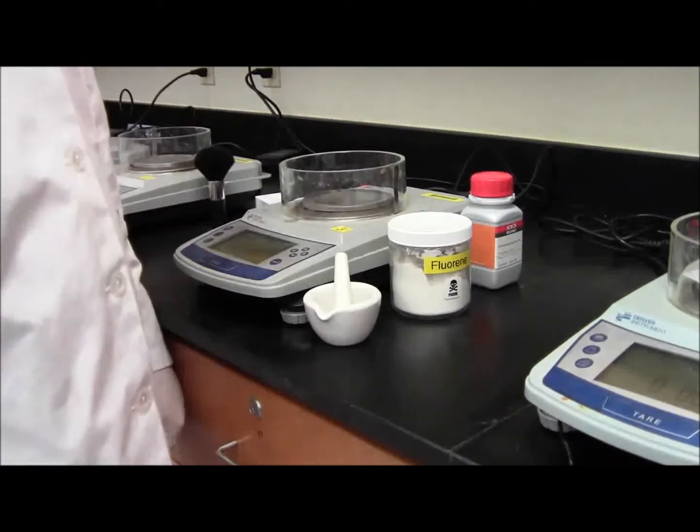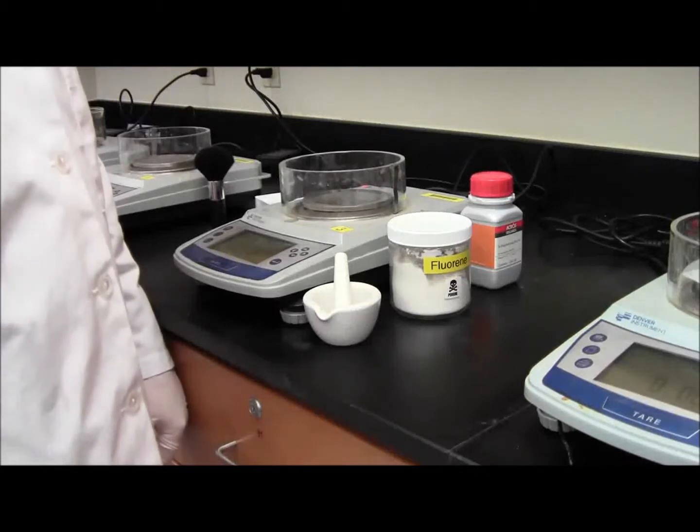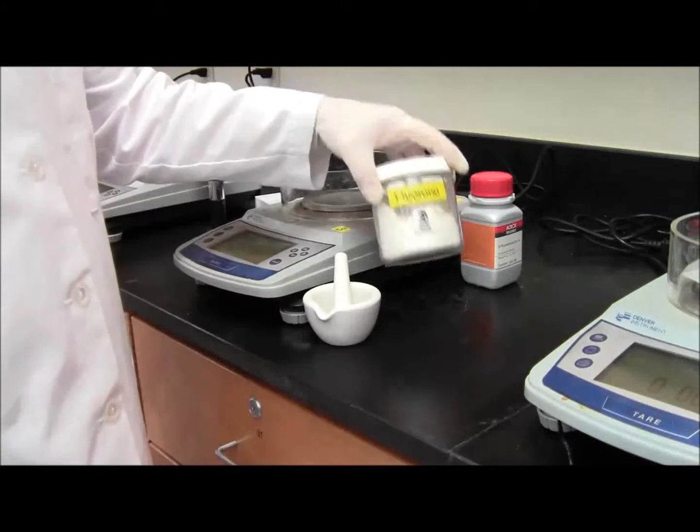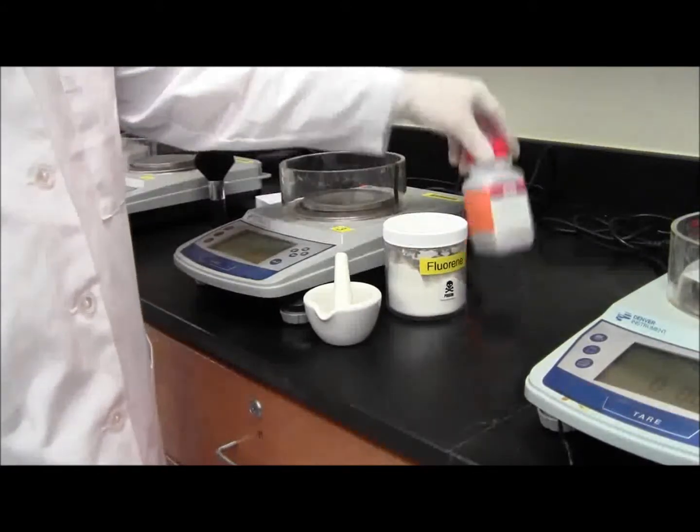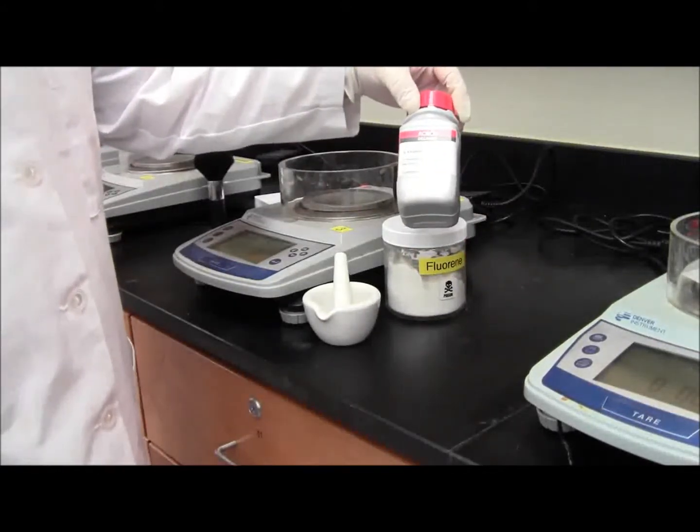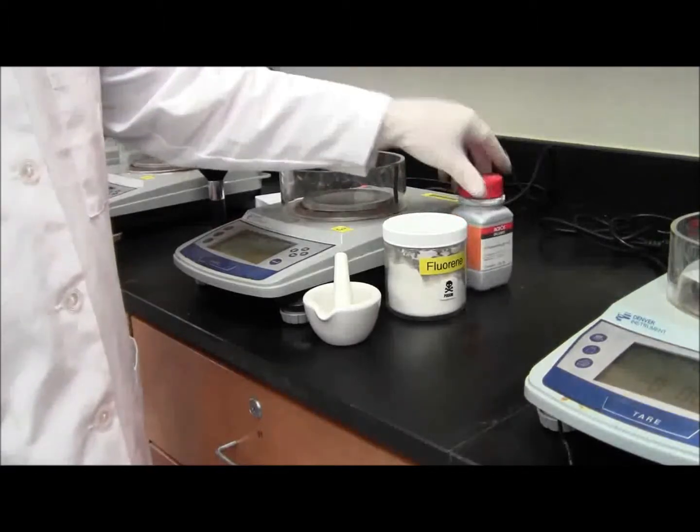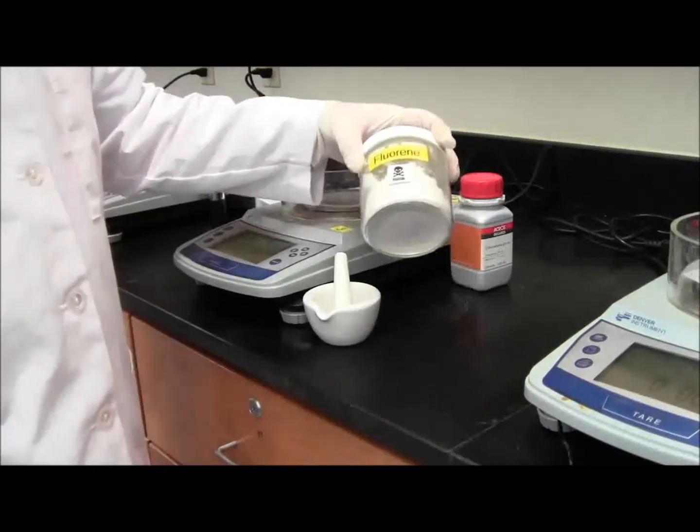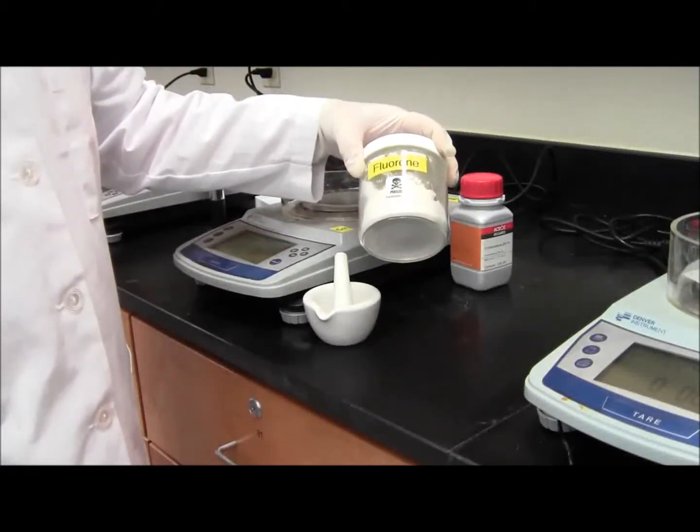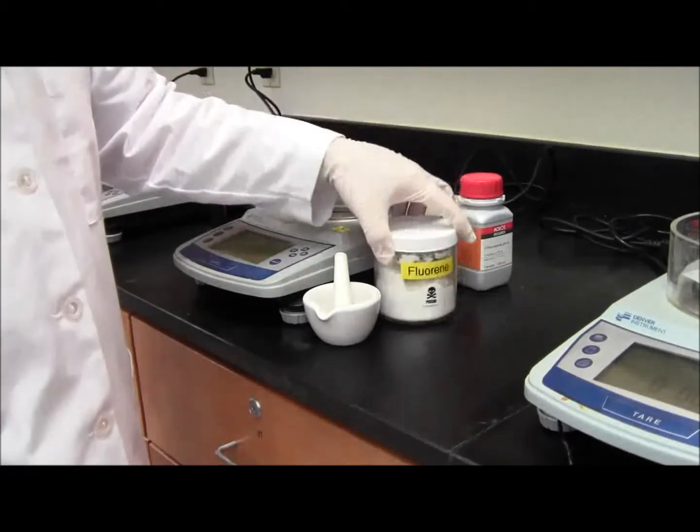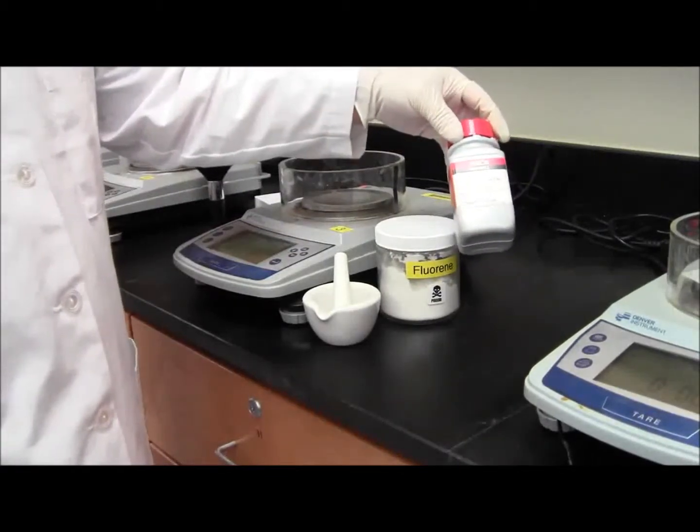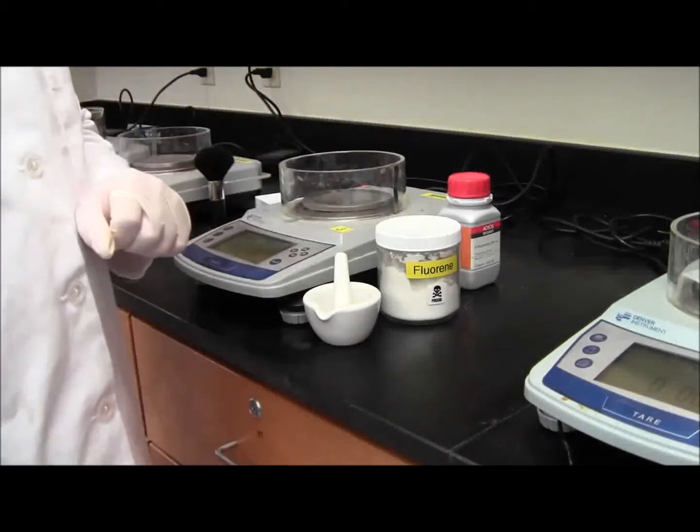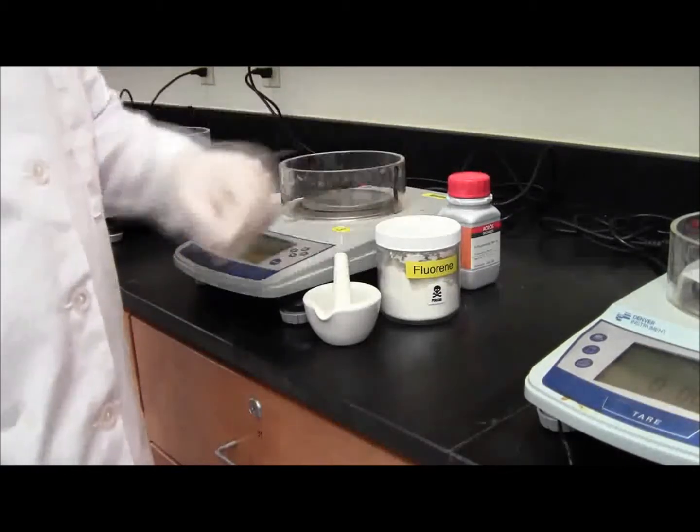In the second part of the experiment, we are going to add 0.95 grams of fluorene to 0.05 grams of fluorenone. This will be the desired product; this will be the undesired product. The fluorene is a white crystal. You will see that the fluorenone is a yellow crystal. Your final product will only have the white crystal.